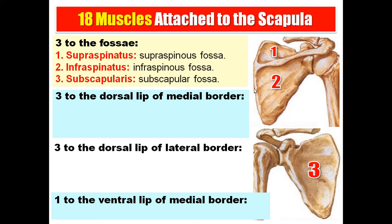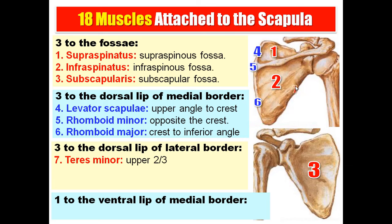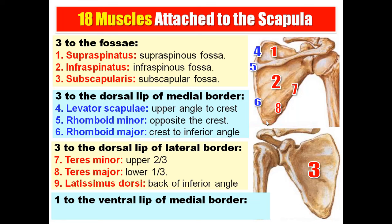Three muscles attach to the dorsal lip of the medial border: levator scapulae from the superior angle to the crest of the spine, rhomboid minor opposite the crest, and rhomboid major from the crest to the inferior angle. Three muscles attach to the lateral (axillary) border: teres minor to the upper two-thirds, teres major to the lower one-third, and latissimus dorsi to the back of the inferior angle. Serratus anterior inserts into the ventral lip of the medial border.